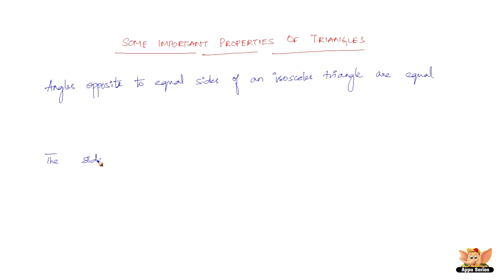Going to another property here, the sides opposite to equal angles of a triangle are equal.